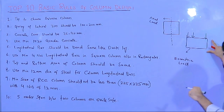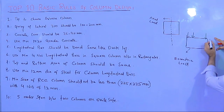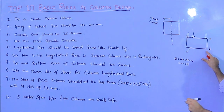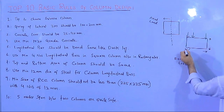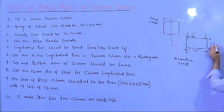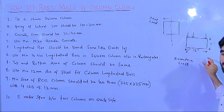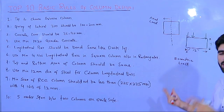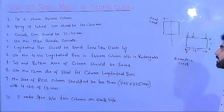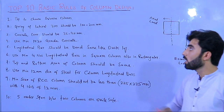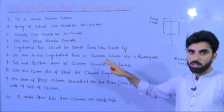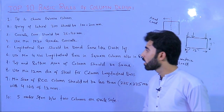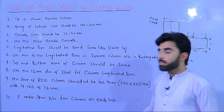The width of the rectangular column should be a minimum of three-quarters of its length. For example, if the length is 12 inches, the width should be 9 inches. When both dimensions are equal — such as 12x12 or 9x9 inches — that becomes a square column. So if you have eccentric load, choose the rectangular column.